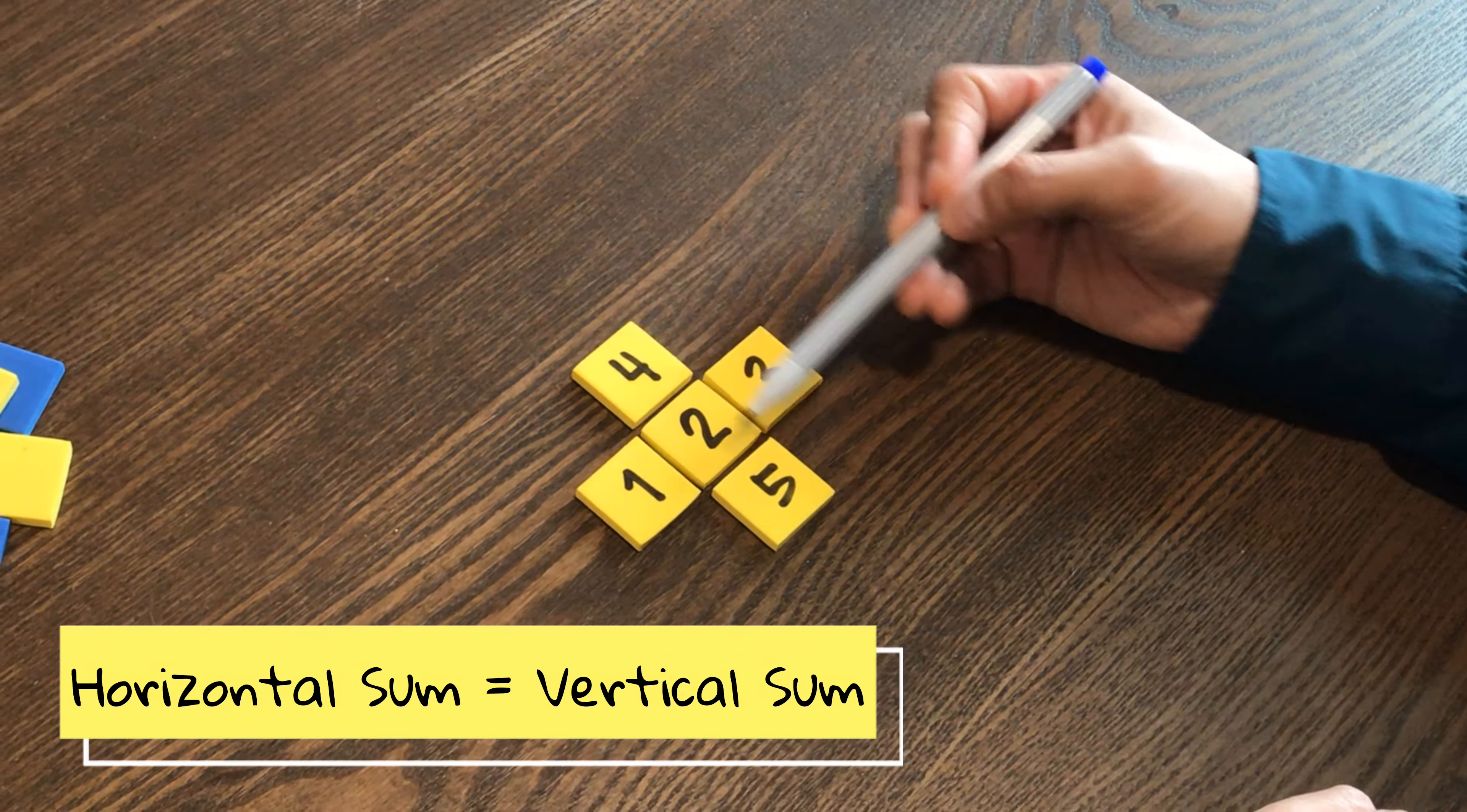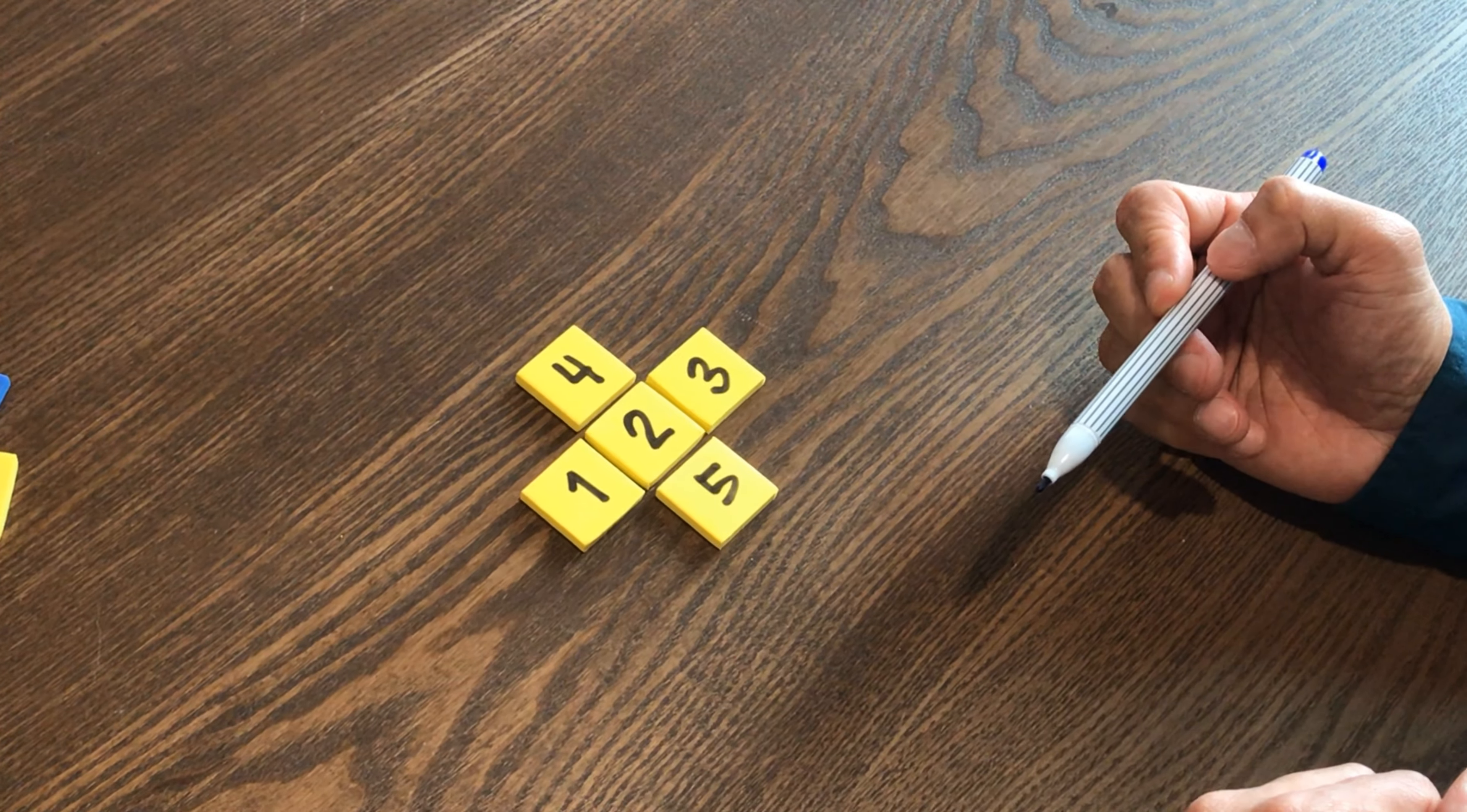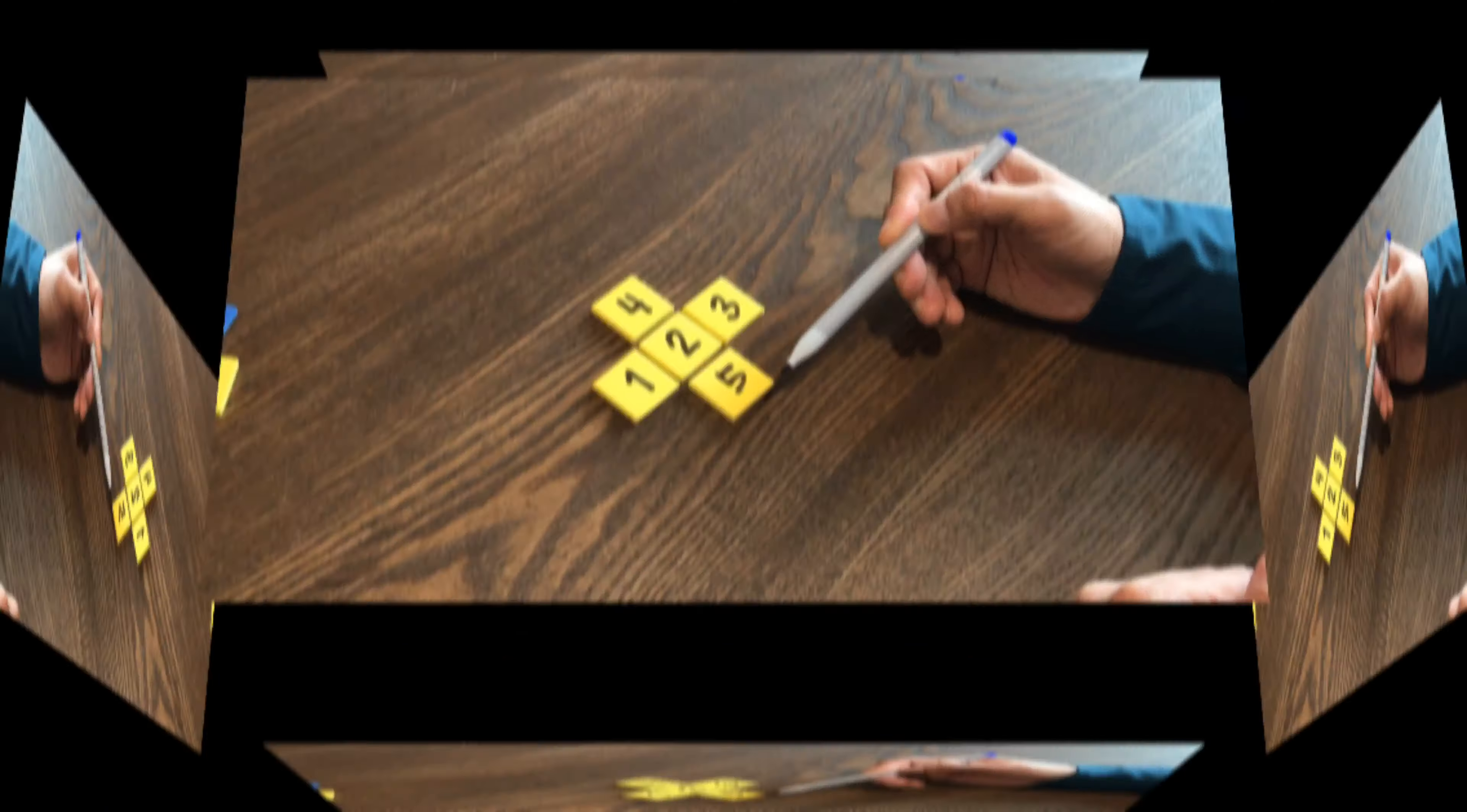Obviously, I'm not correct because this adds up to 6, whereas that adds up to more than 6. How can I rearrange the numbers so that the total of these 3 is equal to the total of those 3? Why don't you give it a try?